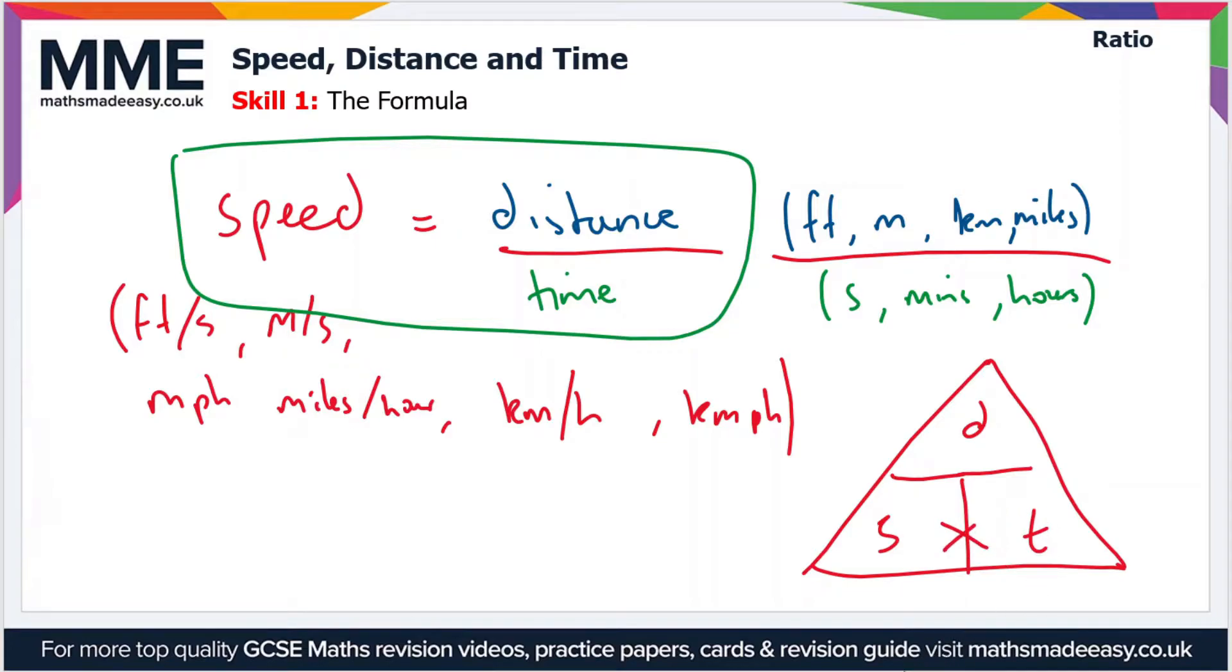So you can put a multiplication symbol in there. So that's what our pyramid or triangle looks like for the speed, distance and time formula. So let's move on to have a look at some example questions to see the formula in action.